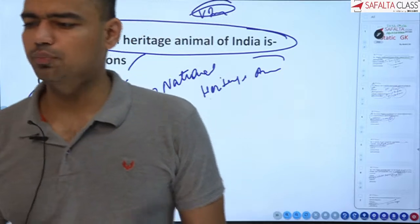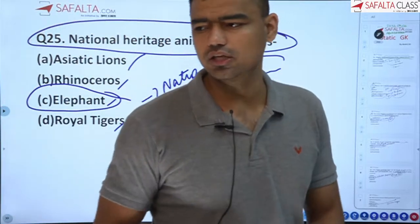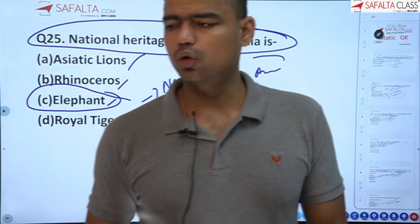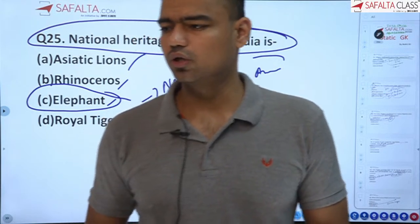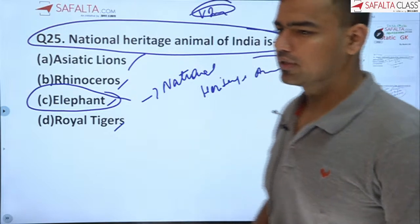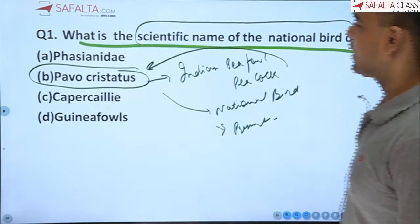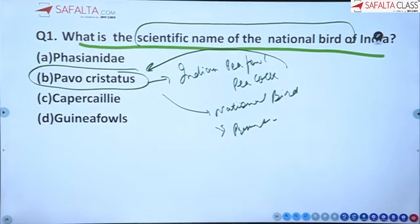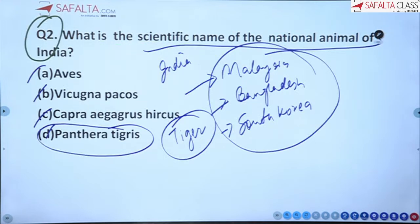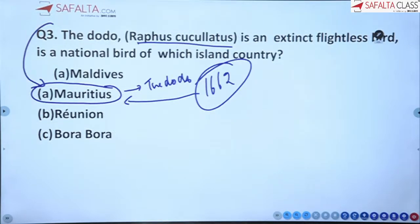Now let's revise all questions from start to end. We'll repeat them with their answers. Give a thumbs up if it's clear. First question: the scientific name of the national bird of India — Peacock — is Pavo cristatus. Second: the scientific name of the national animal — Tiger — is Panthera tigris.